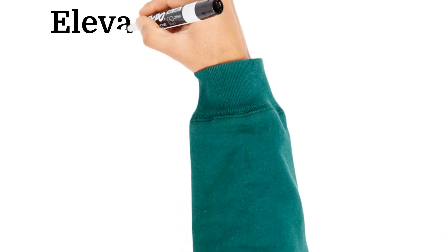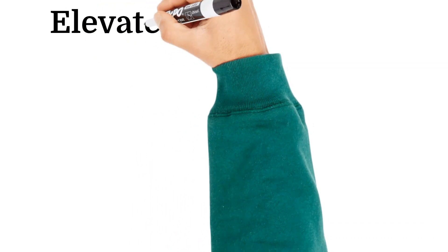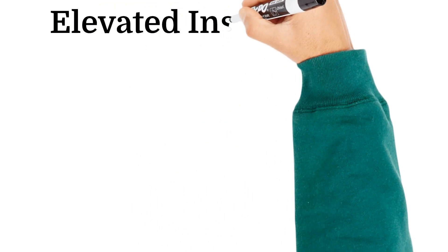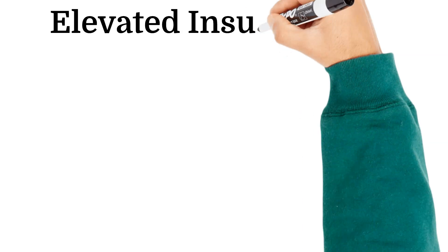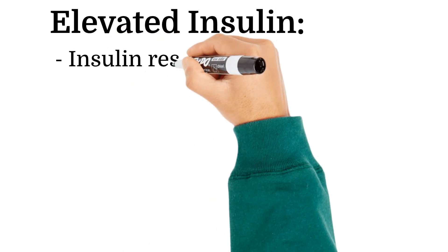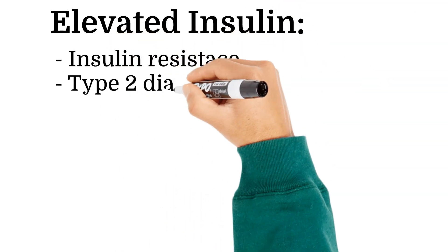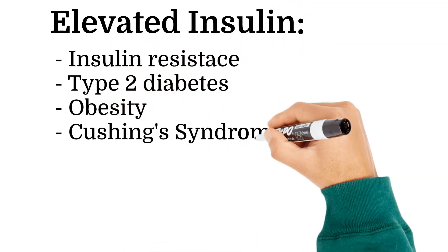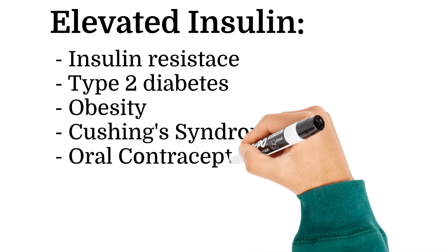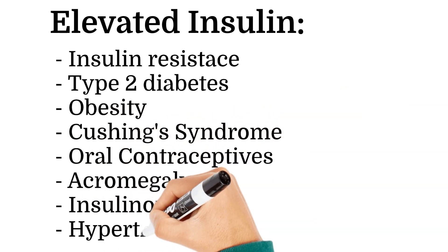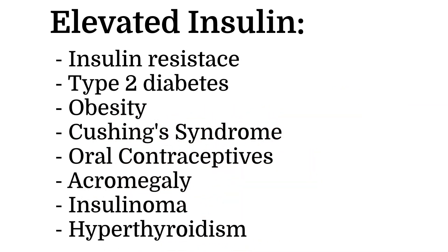Increased levels of insulin may be seen in insulin resistance, type 2 diabetes, obesity, Cushing syndrome, oral contraceptive use, acromegaly, insulinoma, and hyperthyroidism.